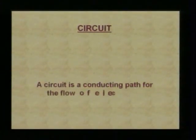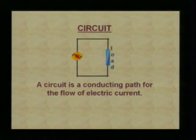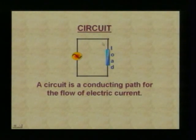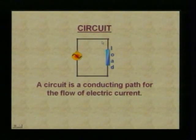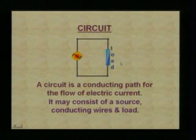When we switch on a bulb, it glows. This is an example of a circuit. A circuit is a conducting path for the flow of electric current. We have a circuit with a source, a load, and a conducting path. When the switch is closed, the current flows through the circuit and the load does the job. So an electric circuit may consist of a source, conducting wires, and loads.